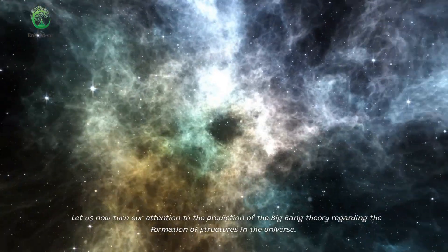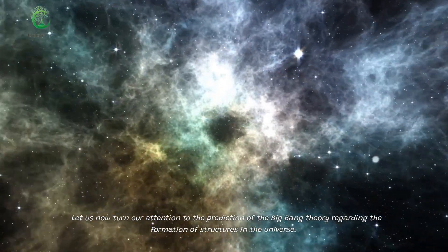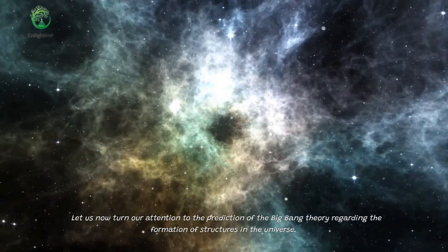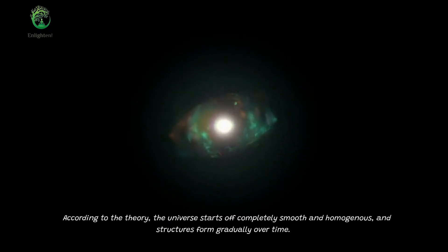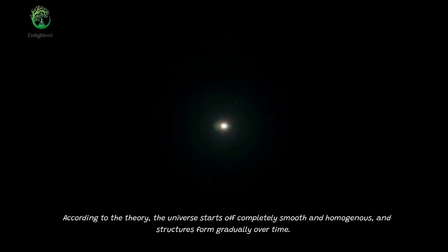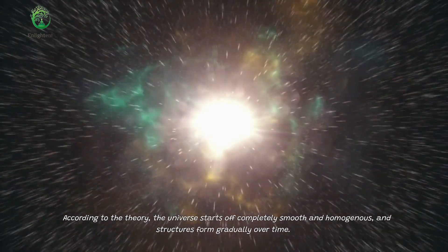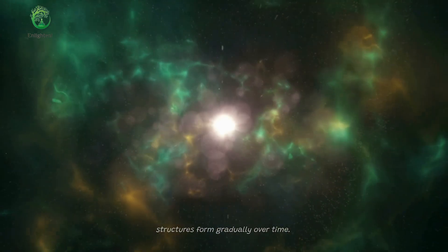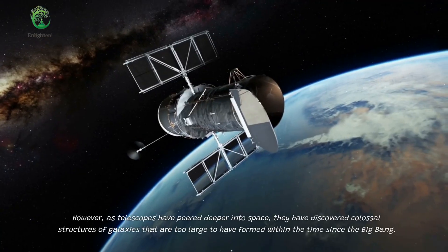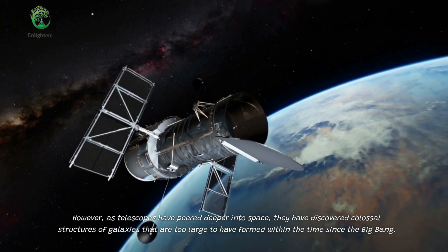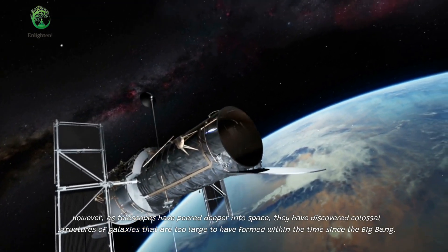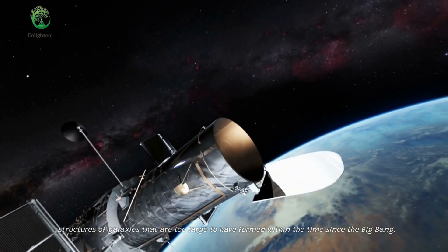Let us now turn our attention to the prediction of the Big Bang Theory regarding the formation of structures in the universe. According to the theory, the universe starts off completely smooth and homogenous, and structures form gradually over time. However, as telescopes have peered deeper into space, they have discovered colossal structures of galaxies that are too large to have formed within the time since the Big Bang. This observation challenges the very core of the Big Bang Theory's predictions.